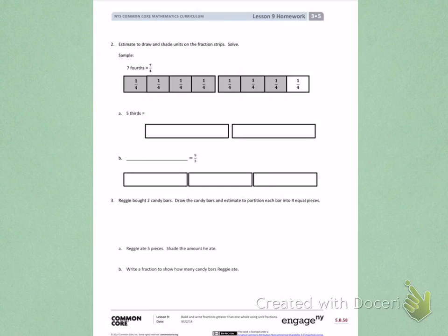7 fourths. I see that they have partitioned each whole into fourths and labeled as unit fractions 1 fourth in each section. Then, they have colored or shaded 7 of those fourths to model the fraction 7 fourths.